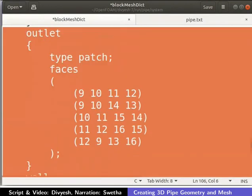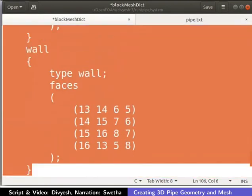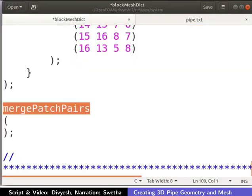The outlet and wall boundary is defined as shown. Note that all boundaries have more than one face. We do not have any patches or internal faces to merge. Therefore, we leave the mergePatchPairs field empty.